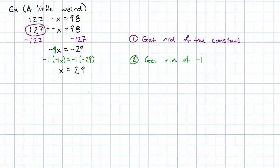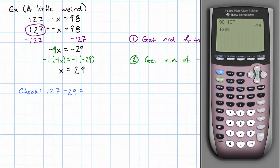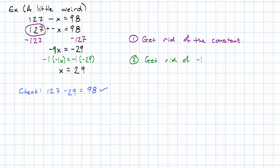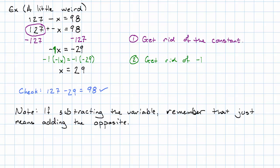Did that really work? Let's check. 127 minus 29. That really is 98, as we hoped it would be. So what's the new thing that we see here? If we're subtracting the variable term, remember that that just means adding the opposite.